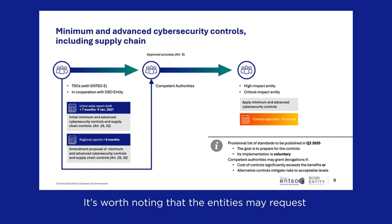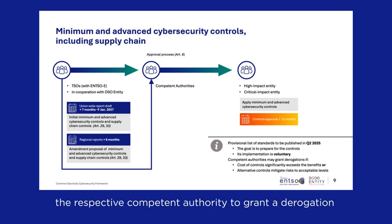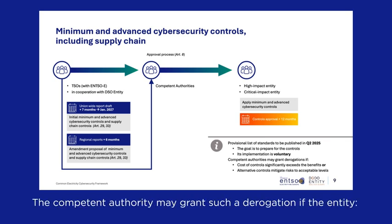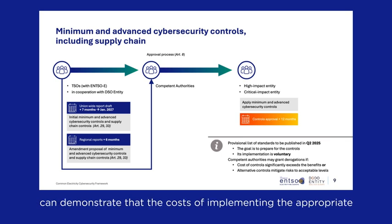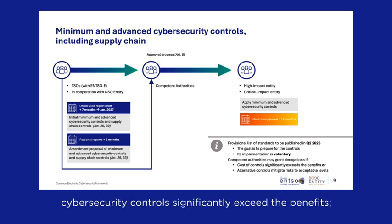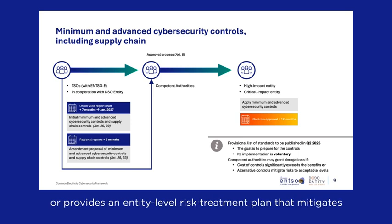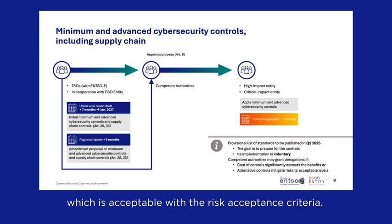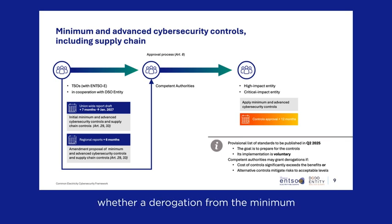It's worth noting that entities may request the respective competent authority to grant a derogation from their obligation to apply the minimum and advanced cybersecurity controls. The competent authority may grant such a derogation if the entity can demonstrate that the costs of implementing the appropriate cybersecurity controls significantly exceed the benefits, or provides an entity-level risk treatment plan that mitigates the cybersecurity risks using alternative controls to a level acceptable with the risk acceptance criteria. The competent authority then has three months to decide whether a derogation can be granted.